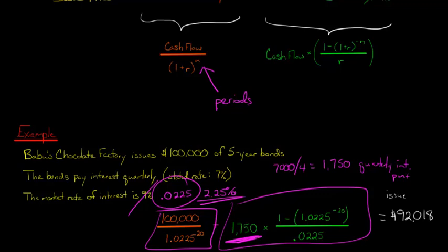So, this amount is the issue price of the bond. And what that means is that the investor who buys this bond from Babu's Chocolate Factory would pay $92,018. And that amount is discounted because they're getting the right to receive $100,000 five years from now.